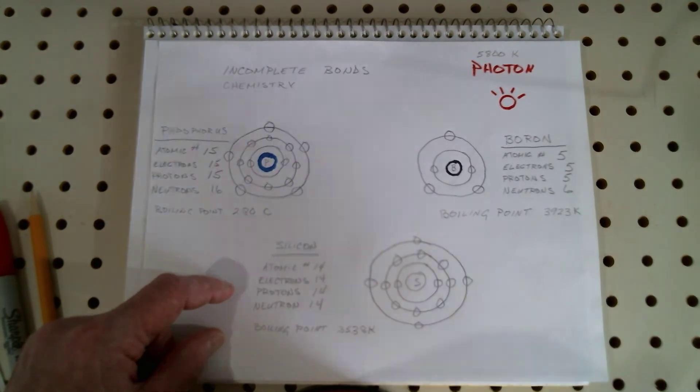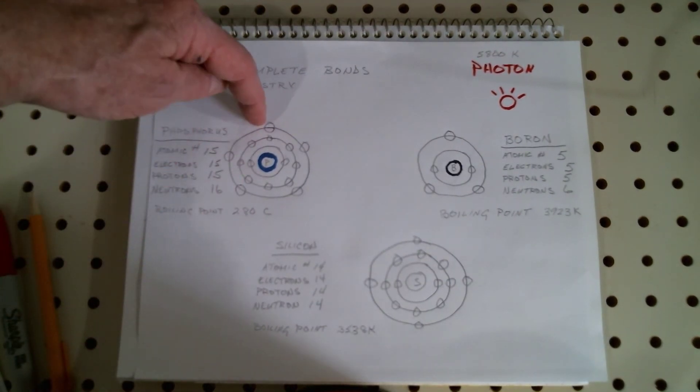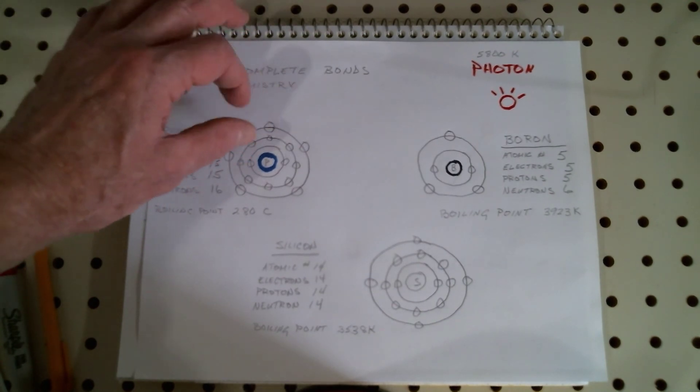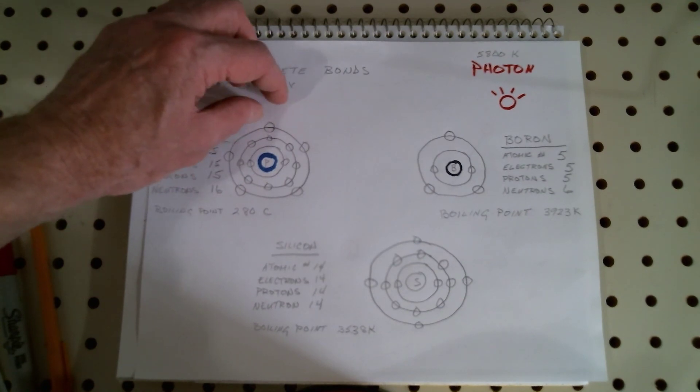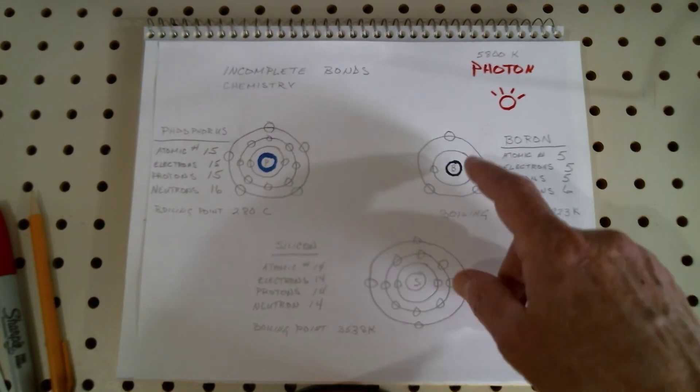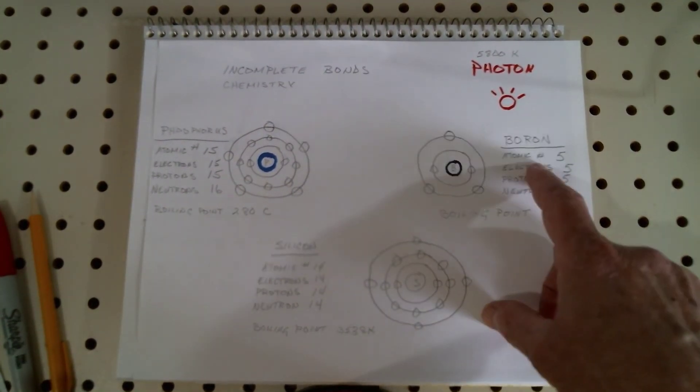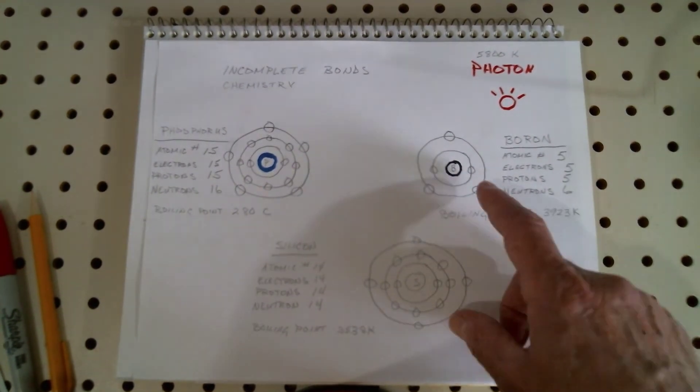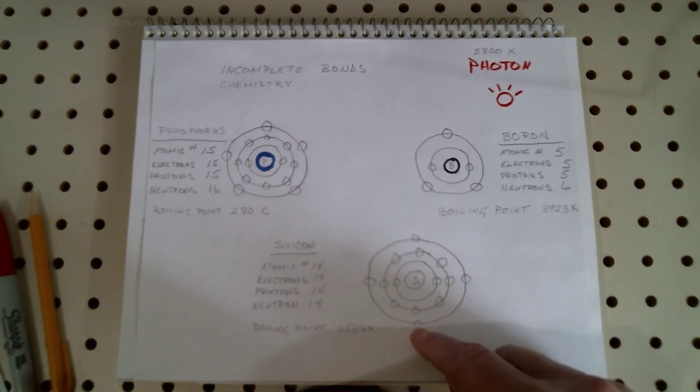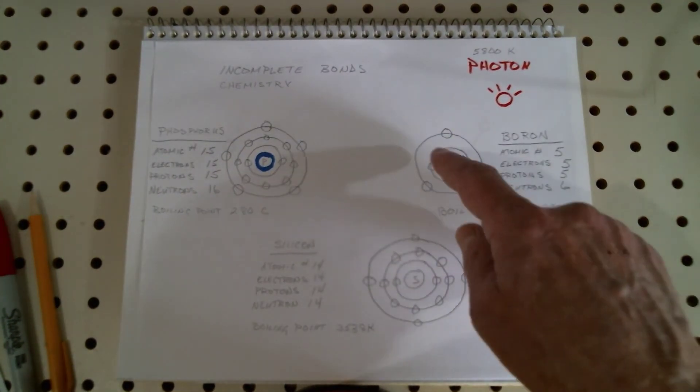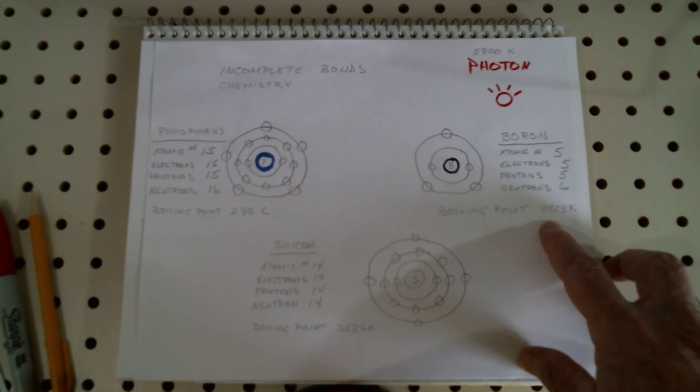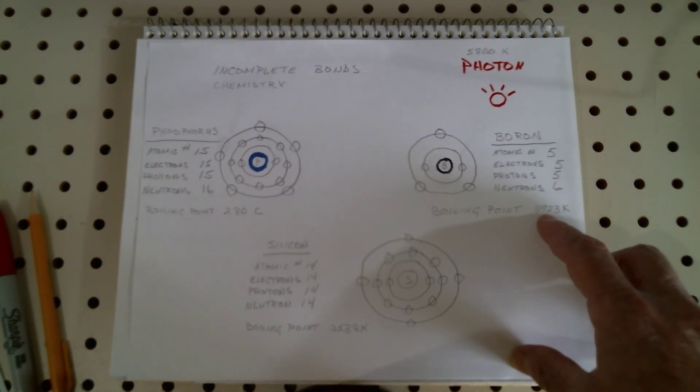If we bond, if we dope as it's commonly referred to, the silicon with boron, as you can see there are three and in effect it has an incomplete bond in that it is one short of bonding with a silicon atom. I've indicated the boiling point here also. This is an important number and the boiling point of phosphorus is very low, very low. It's a non-metal, it's rather reactive.